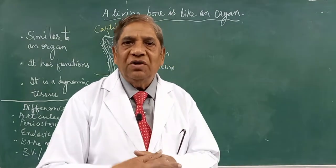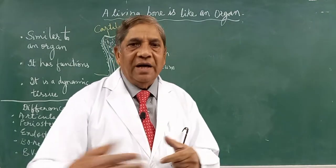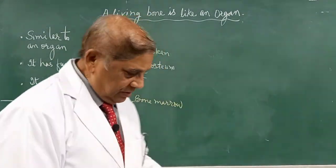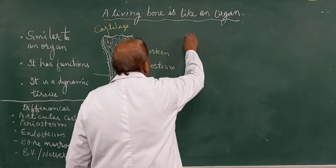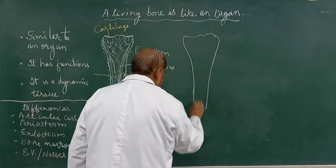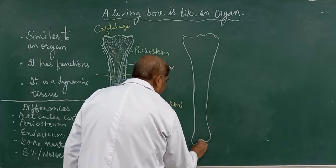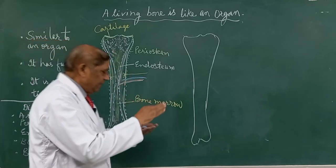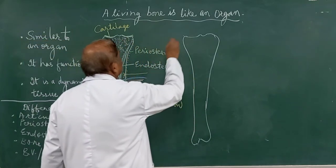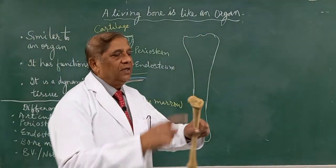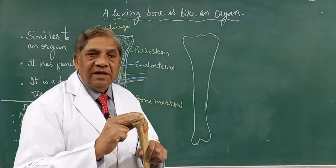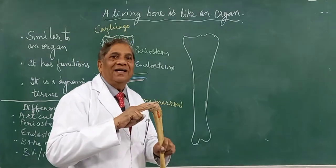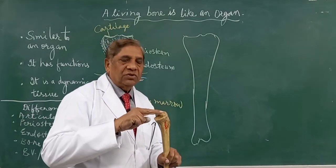Let us quickly see the differences between a living bone and a dead bone. A living bone has blood vessels, a periosteum, and articular cartilage. A dry bone will not have cartilage — at the end of the bone you can see the articular area, but it is not covered by articular cartilage. Do not try to find the cartilage when handling a bone in your classroom, because the cartilage — a specialized connective tissue — dries up and falls off.